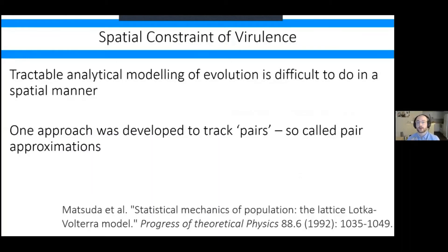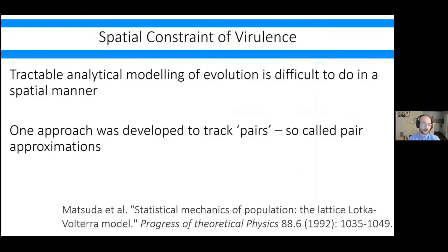There have been huge amounts of effort to model these processes. Tractable modelling of evolution in a spatial manner is quite difficult to do. One approach is to track so-called pairs using pair approximations of sites. The original paper introducing these pair approximations came out of the Journal of Progress of Theoretical Physics — not a journal I anticipated reading as a grad student. The principle of pair approximations dates to 1992.